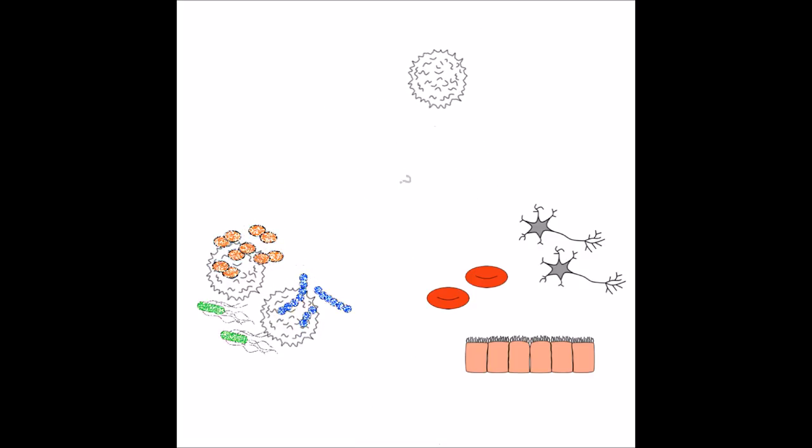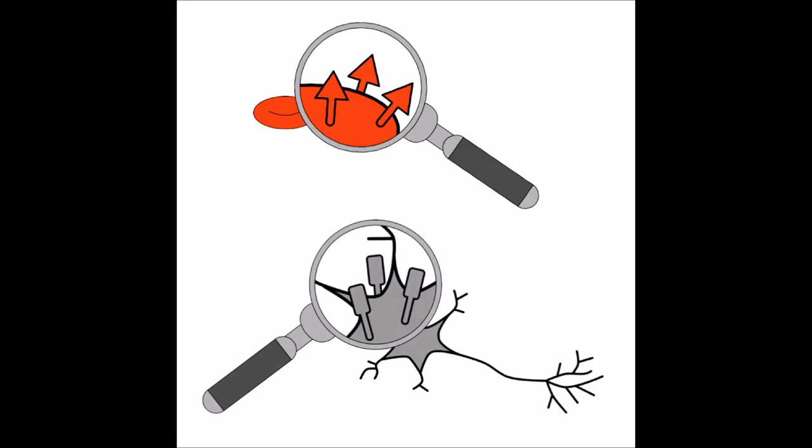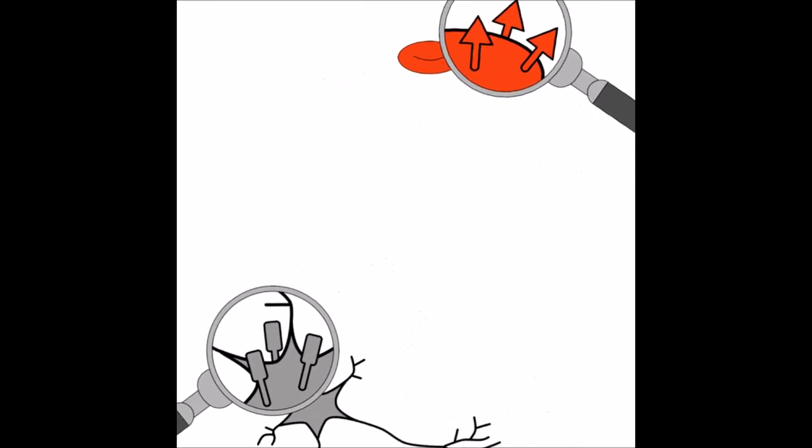So how can our body distinguish between the cells that belong to itself and the cells that don't belong to itself? Well, one of the ways cells are different from each other are the kinds of markers they have on their surface. Blood cells have one set of markers, and brain cells have another set. And they all look slightly different from each other.